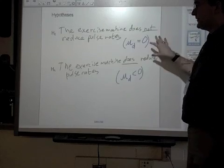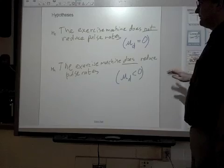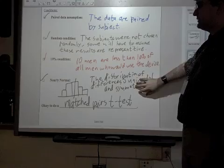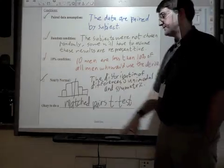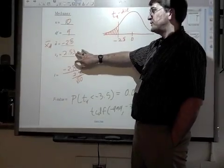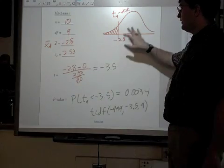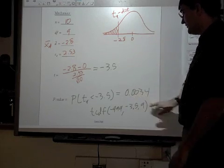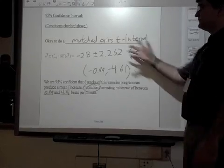We make our hypotheses about the differences, about the average difference. We make our conditions, talking about why we're pairing the data, random condition, 10% condition, nearly normal condition, about the differences. We make a histogram of the differences. And then we find the mean and standard deviation of the differences. We're looking at the differences now. Have our table, or our picture there, t-score, finding the p-value, making our conclusion in context, and then our result there, our confidence interval there.